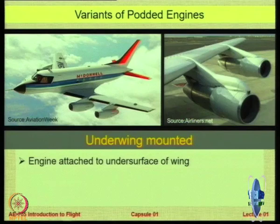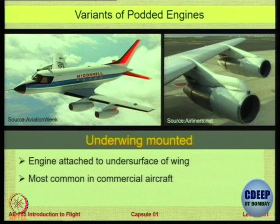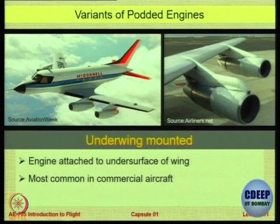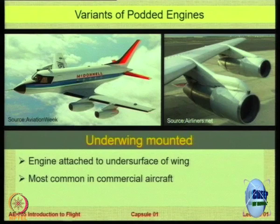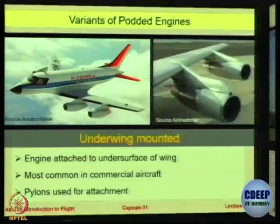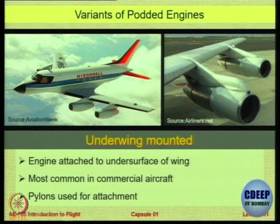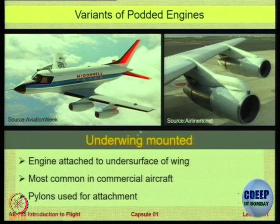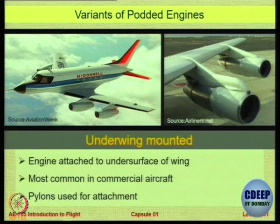There are many variants. Underwing-mounted engines are most common — Boeing was the first company to try out this configuration with engines below the wing, and they made it work very well from the Boeing 707 onward. The member that connects the wing to the engine is called a pylon.